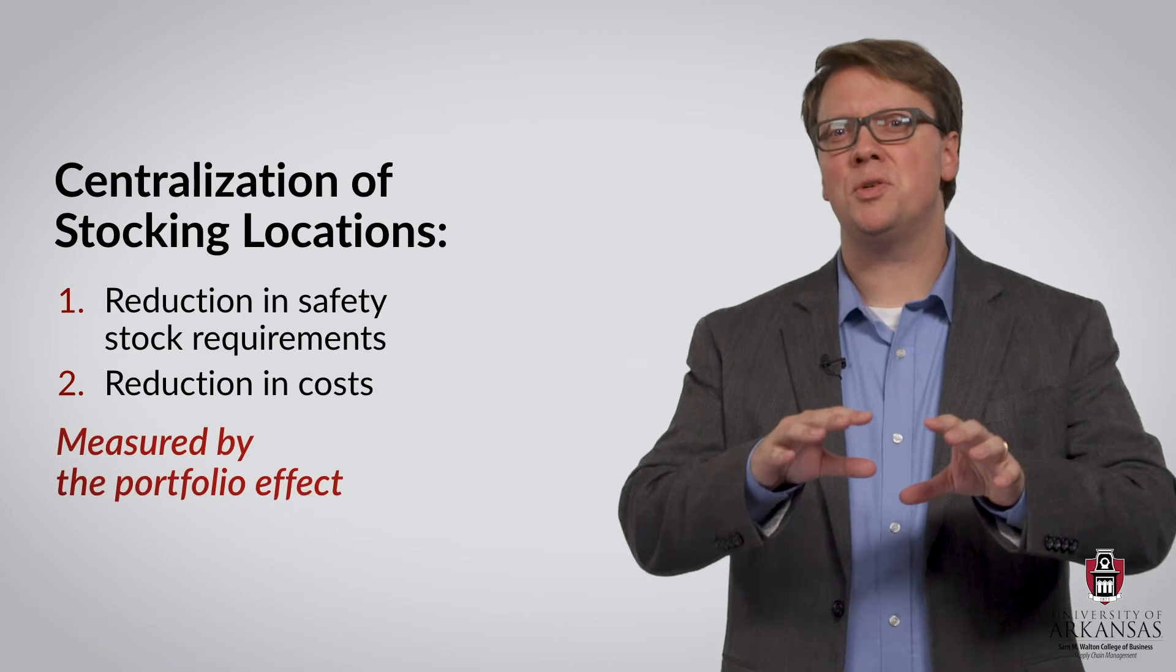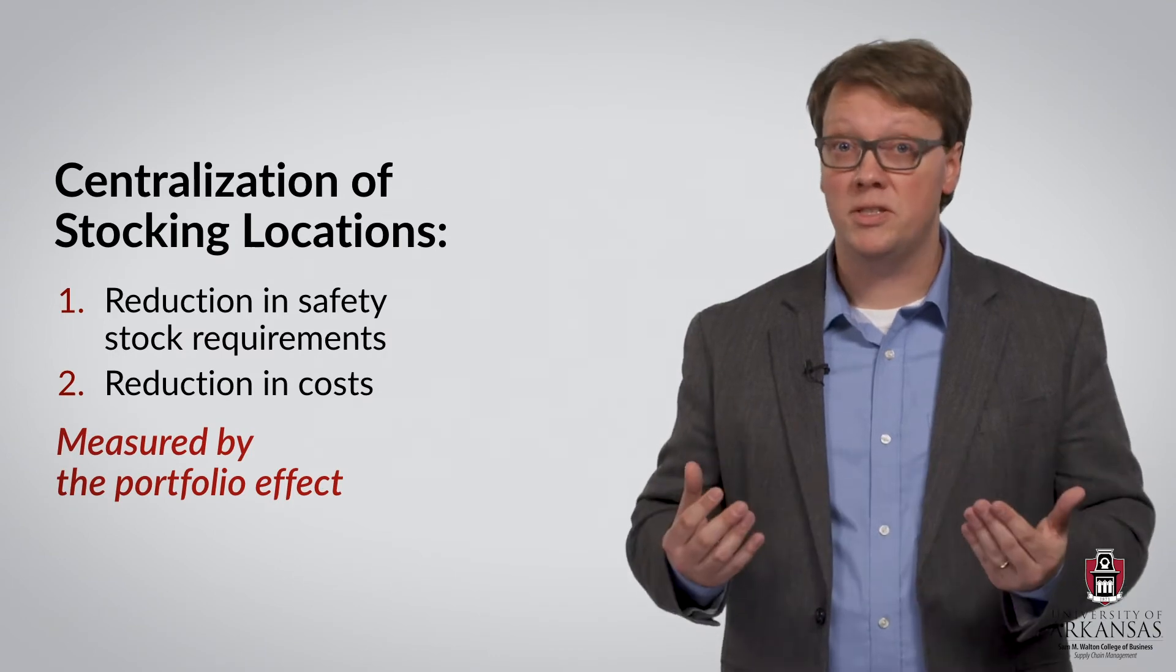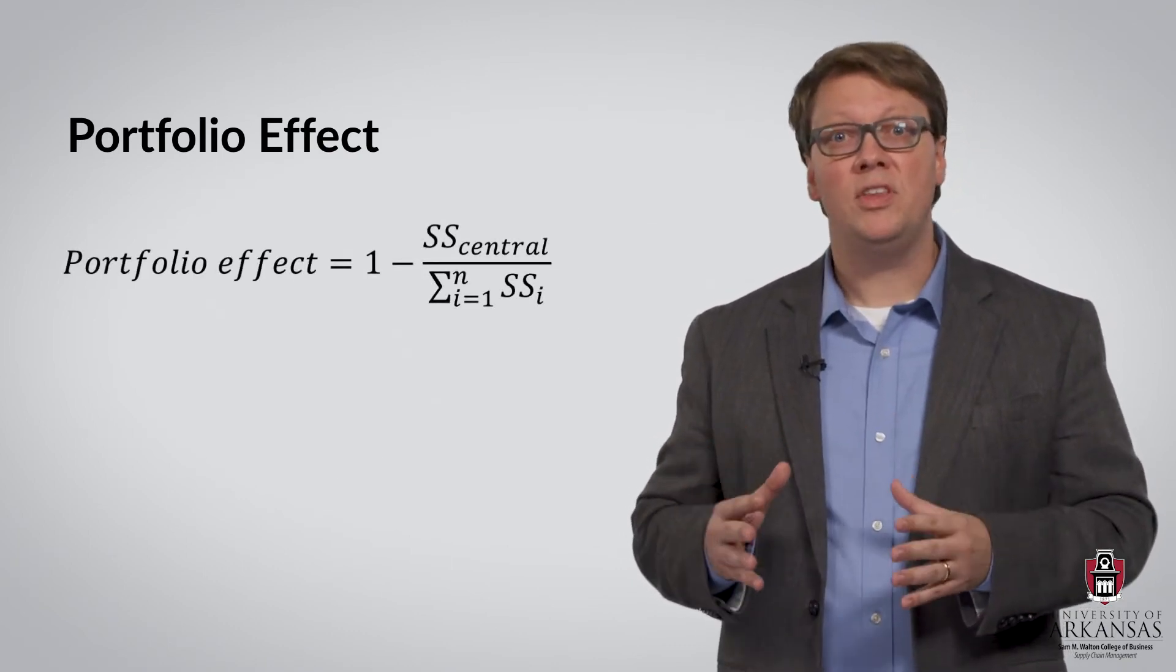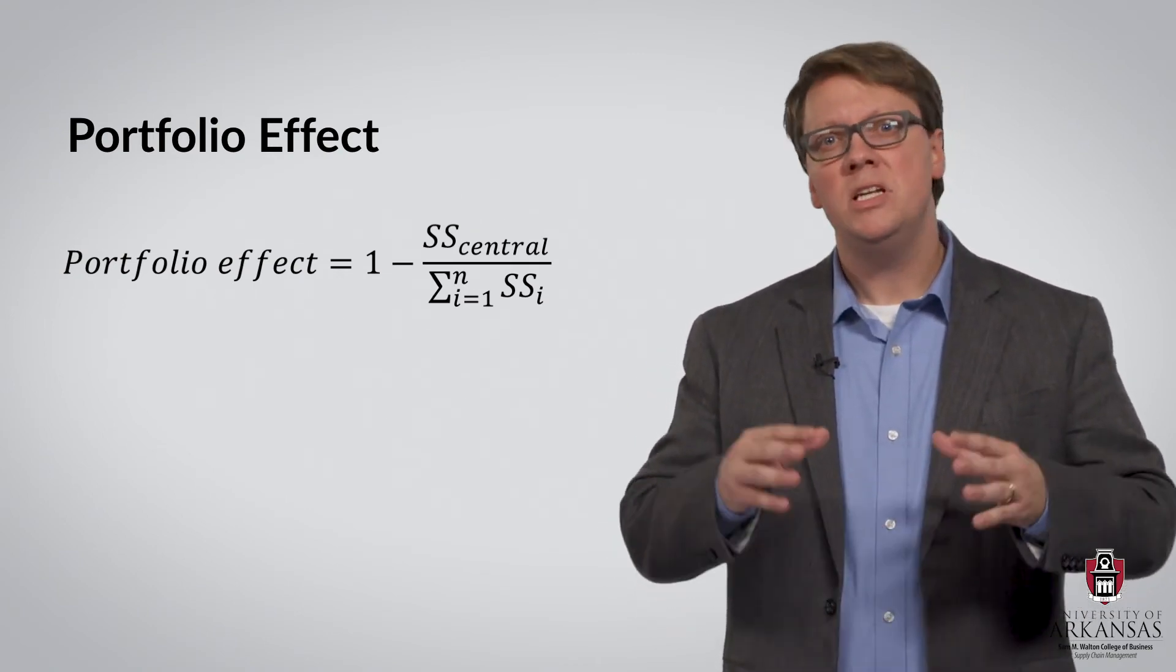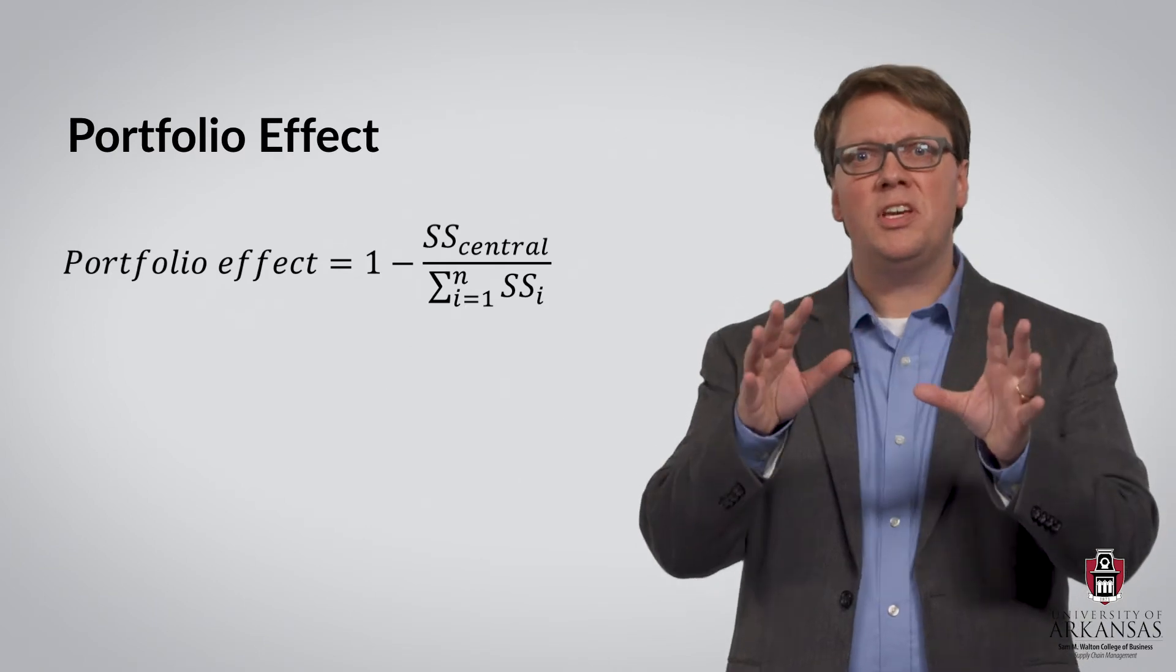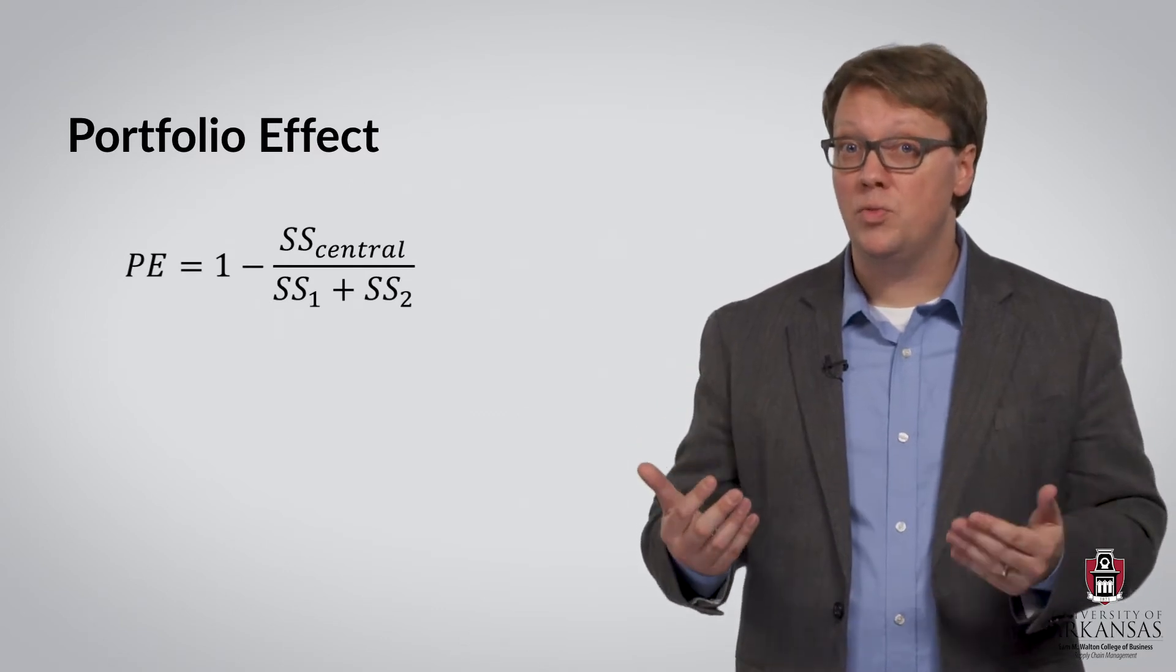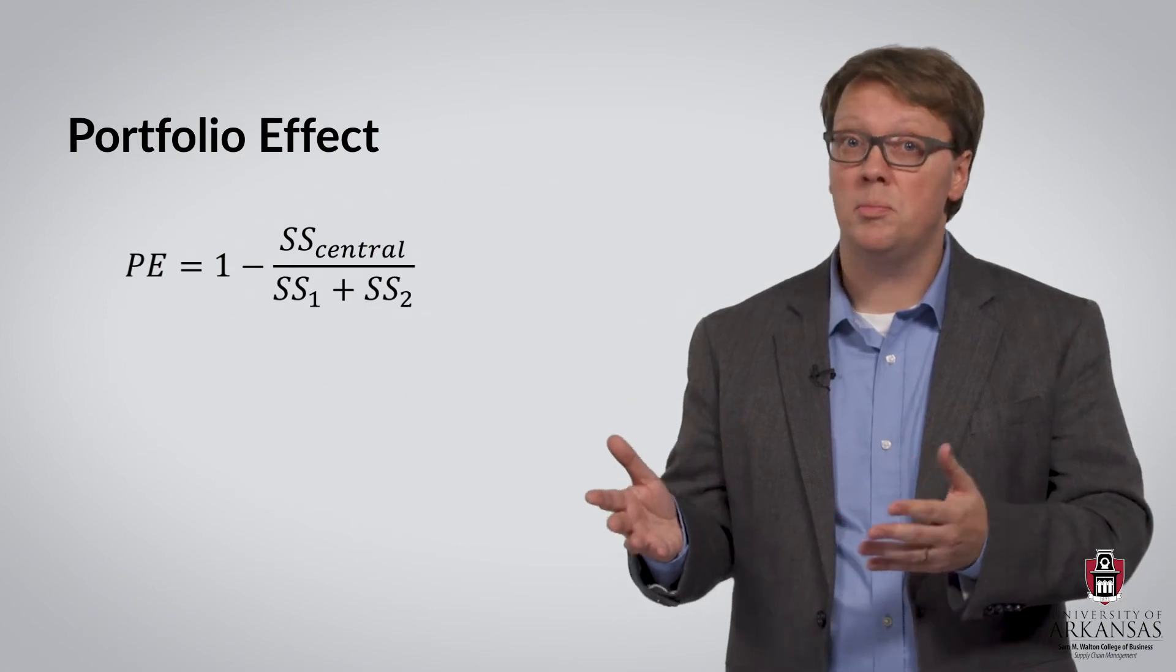We can even measure the expected percent reduction in safety stocks by means of the portfolio effect. Let me explain. The portfolio effect can be calculated as one minus the ratio of total safety stocks after centralization divided by the sum of safety stocks before centralization. Let's again simplify a little and just look at the case where we consolidate two DCs into one. So the portfolio effect will equal 1 minus SS central divided by SS1 plus SS2.